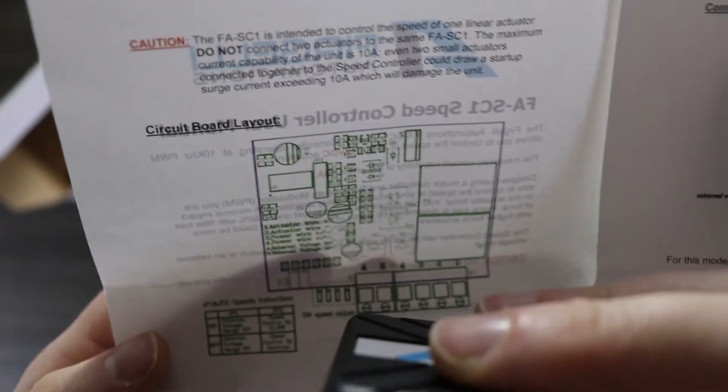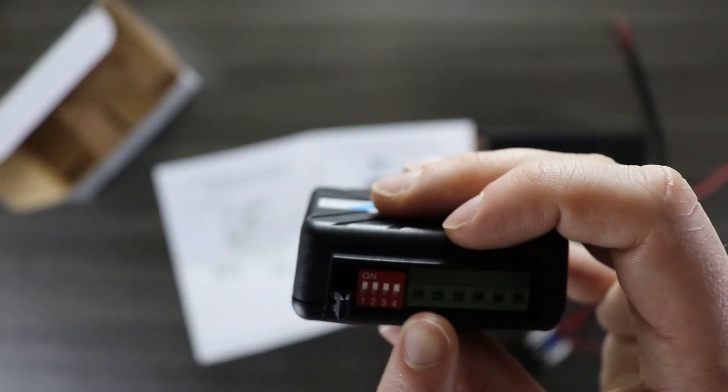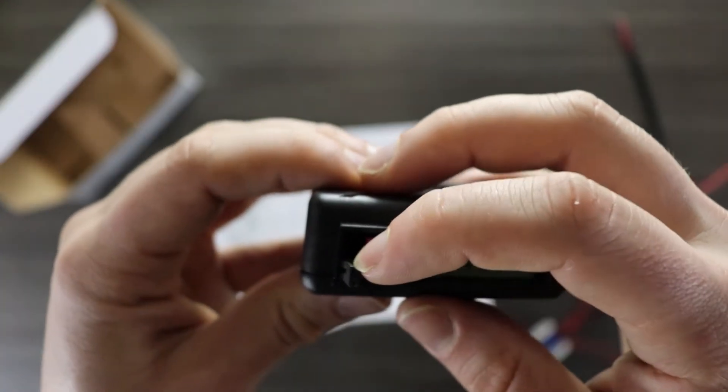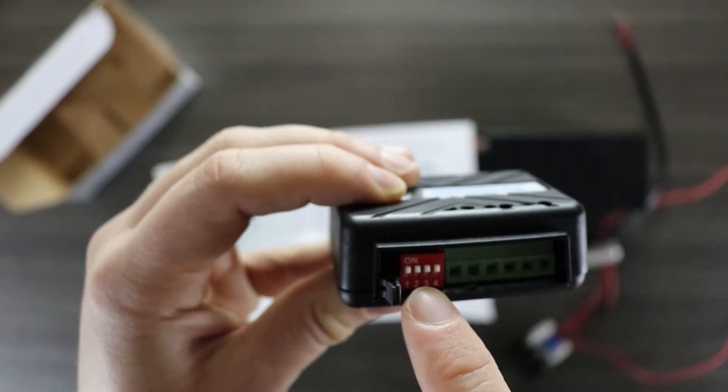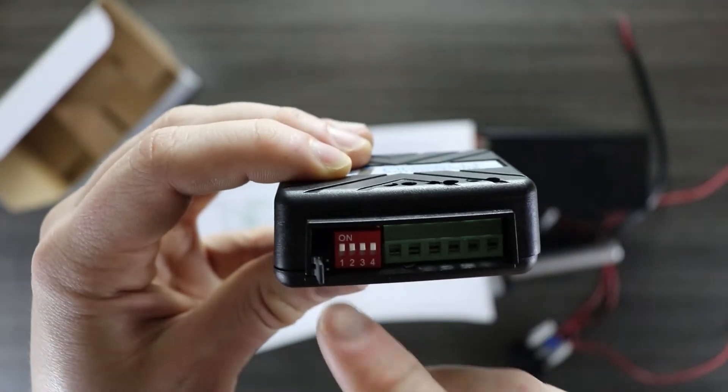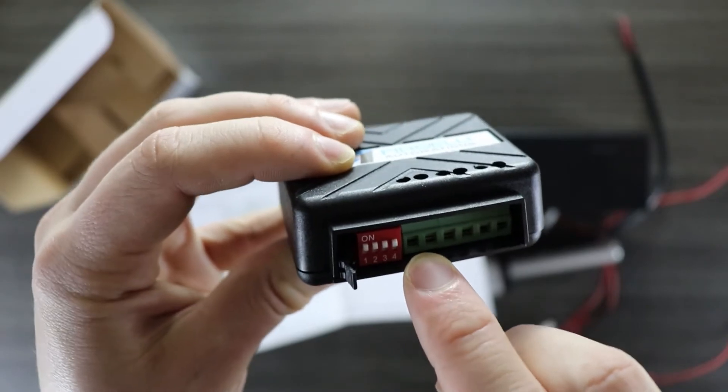The second jumper pin on the right is used for telling the controller whether to program the speed using the dip switches or from the external voltage when you have wires connected to these last two terminal blocks. If you leave the jumper pin on the right connected then the speed will be set manually by these dip switches. And then if you remove the jumper pin the speed will be set by the external voltage connected to these last two terminal pins.